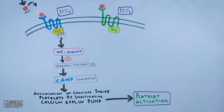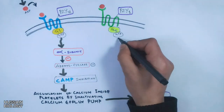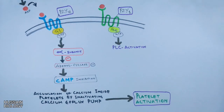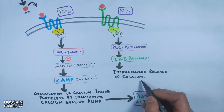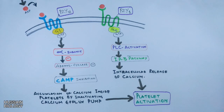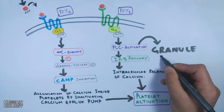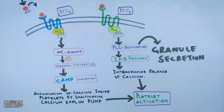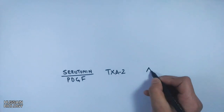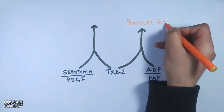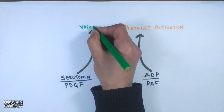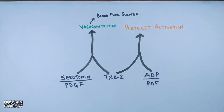On the other hand, when ADP binds to the P2Y1 receptor, it activates the GPCR, which in turn activates the Gq alpha subunit. This Gq alpha subunit drives PLC activation, which activates the IP3 pathway. The IP3 pathway mediates intracellular release of calcium, also causing platelet activation. PLC activation also drives granule secretion from platelets, including serotonin, PDGF, TXA2, ADP, and PAF. TXA2 and ADP further aid platelet activation, while serotonin, PDGF, and TXA2 drive vasoconstriction to slow blood flow during endothelial damage.